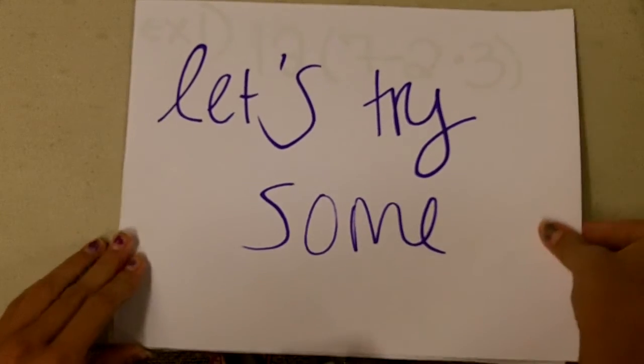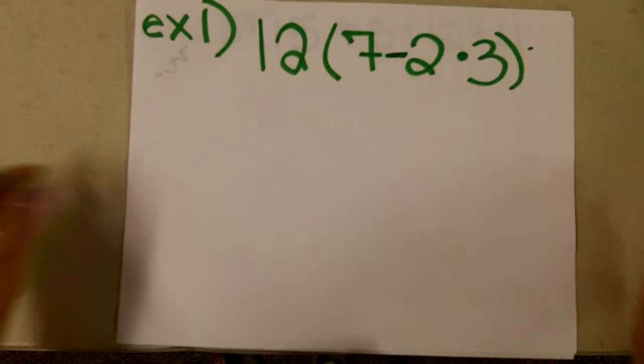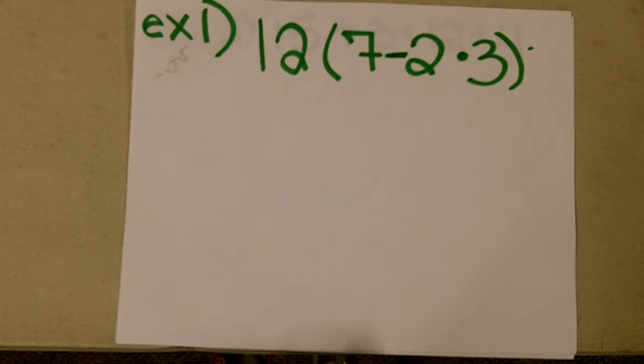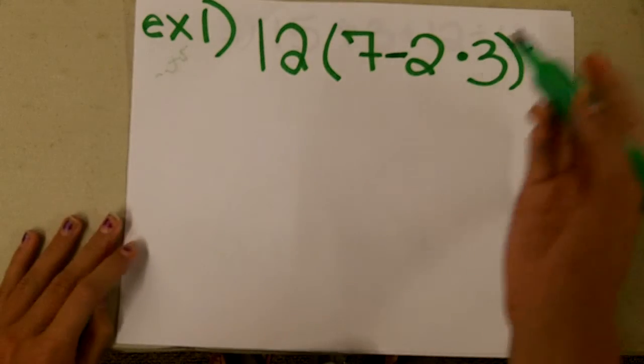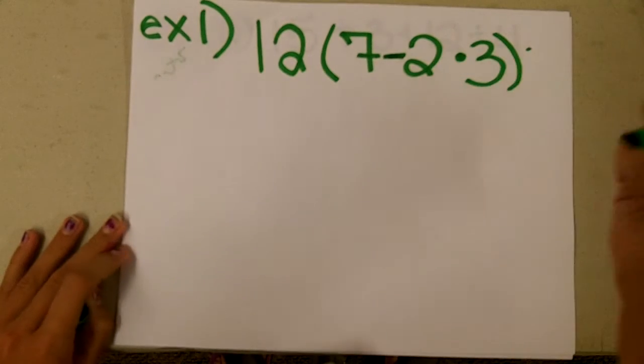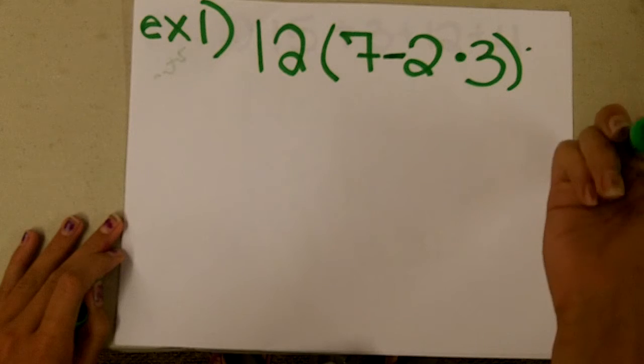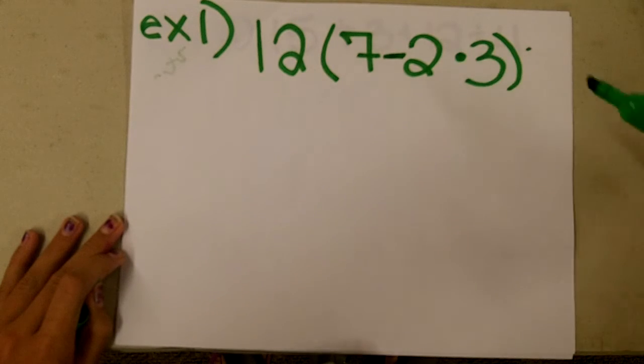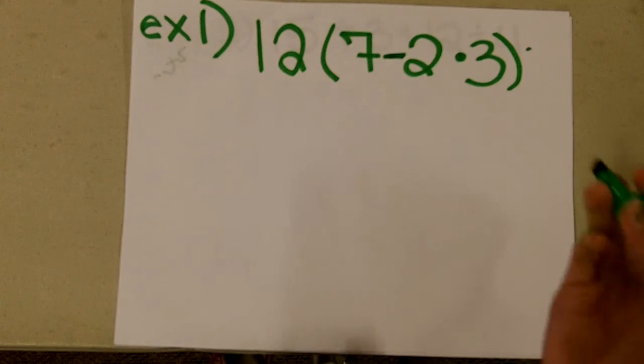So, let's try some. Example number one. The first thing that you do is parentheses. So, 7 minus 2 is negative 5, times 3 is negative 15.